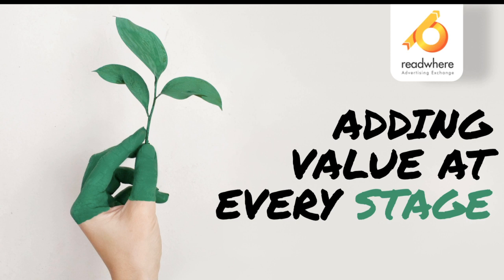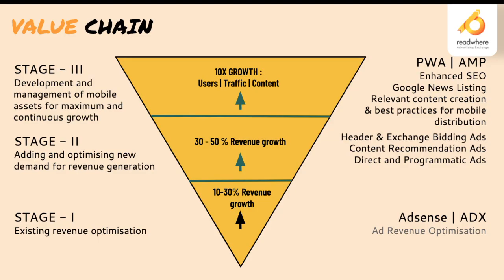Readware adds value at every stage. Stage one is a publisher currently using AdSense and ADX — there's room for 10 to 30% revenue growth by optimizing your AdSense or ADX account based on rules. Regarding how effective unified auction is: we have seen results close to 37% uplift as it creates more demand partners and maximum bids for that inventory, leading to better eCPM.